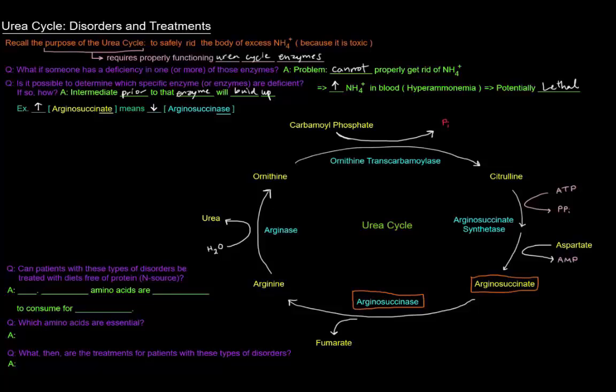So can patients with these types of disorders be treated with diets free of protein or free of a nitrogen source? The answer is no, because there are these things called essential amino acids that are necessary to consume for survival. The essential amino acids are basically amino acids that your body cannot synthesize. The non-essential amino acids are amino acids that your body can synthesize. So essential amino acids are amino acids that you must consume in your diet because you do need all 20 amino acids in order to survive, but the essential ones you can't actually make them yourself, so you have to eat them.